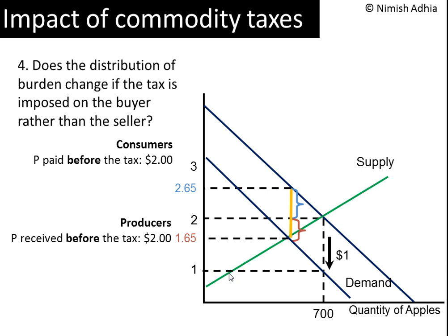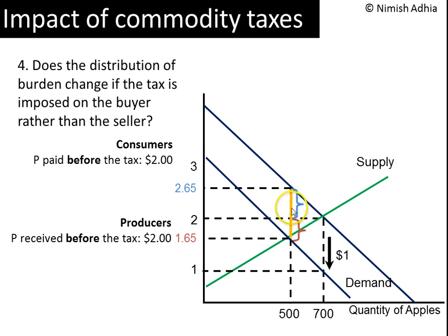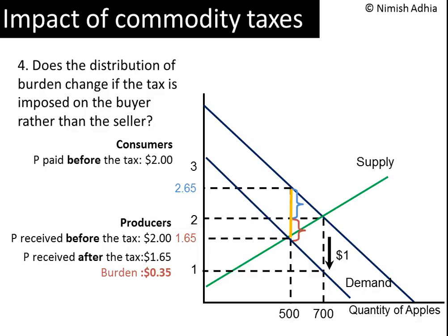Equilibrium will only be established at a price greater than $1, where the new demand curve intersects the supply curve. That seems to be the price of $1.65 and a quantity of $500. How do we know the new equilibrium price is exactly $1.65? The new equilibrium is at the bottom end of the tax wedge, and from the previous exercise analyzing tax collected from producers, the bottom end of the tax wedge corresponds to $1.65. Therefore, the price sellers will now receive is $1.65, which is $0.35 less than before — so $0.35 is their burden.